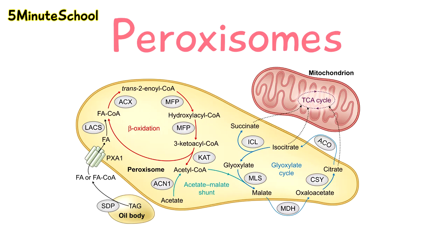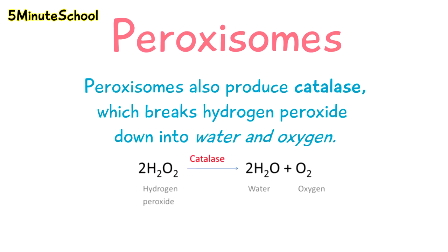The main chemical produced by this oxidation is hydrogen peroxide, which is very cytotoxic — it's toxic for the cell. However, the peroxisomes also produce the enzyme catalase, which helps to break down this hydrogen peroxide into water and oxygen.